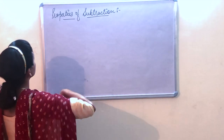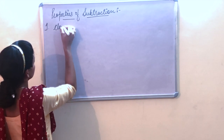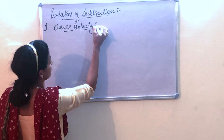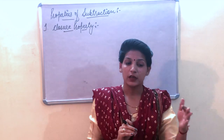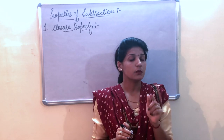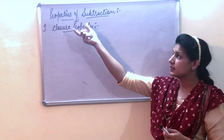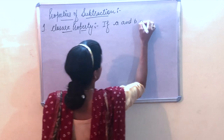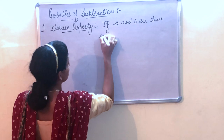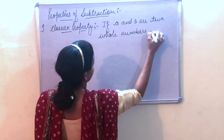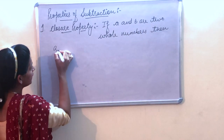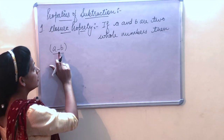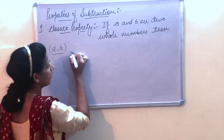So let's check today which properties hold for subtraction of whole numbers and which do not. Our first property is the closure property. In subtraction, if a and b are two whole numbers, then we have to check whether a minus b is also a whole number or not.